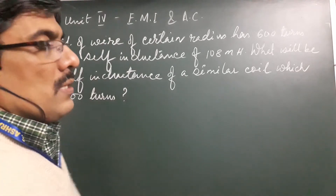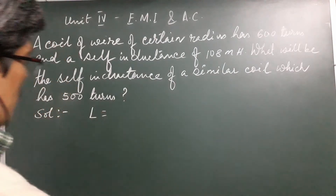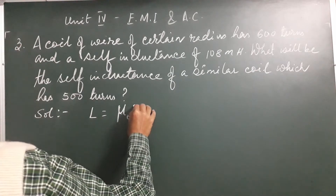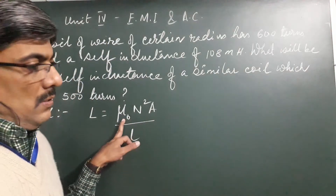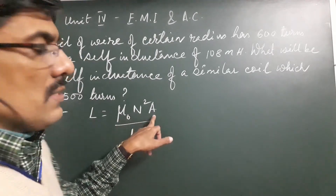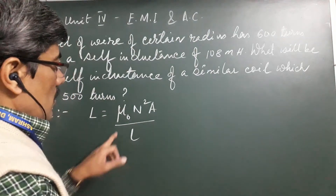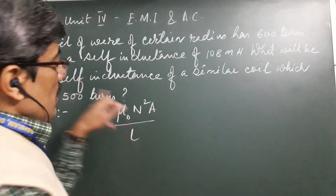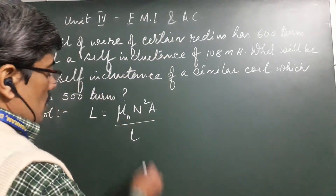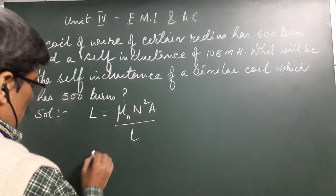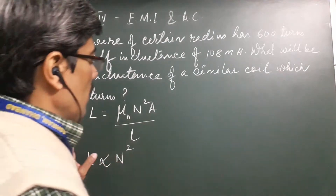Students, the formula for self-inductance of a coil is L = μ₀N²A/l, where μ₀ is the permeability, N is the total number of turns, A is the area of cross-section, and l is the length of the coil. Since it is a similar coil, μ₀, A, and l are not changing — only the number of turns changes. So out of these four terms, three are constant, and we can safely write that the self-inductance L is directly proportional to the square of the number of turns.